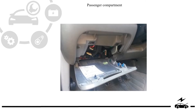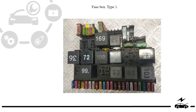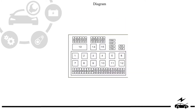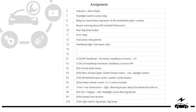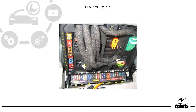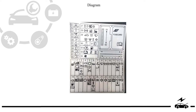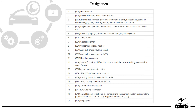Passenger compartment fuse box location. Type 1 diagram and assignment. Type 2 diagram and designation.